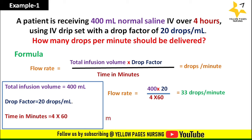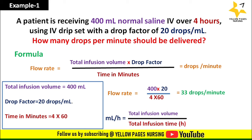To calculate hourly infusion rate, the formula is: ml per hour = total infusion volume ÷ total infusion time = 400 ÷ 4 = 100 ml per hour. The question asked for drops per minute, but we have also calculated ml per hour, which is useful for clinical documentation purposes.